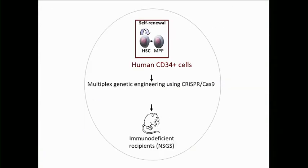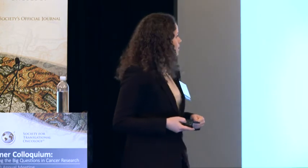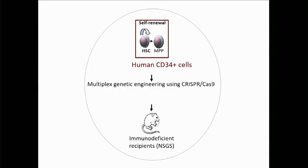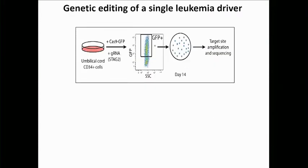For this model, we decided to use human CD34-positive cells, which are enriched for hematopoietic stem cells as well as myeloid progenitor cells, and to which we have relatively easy access. Using CRISPR genome engineering — a technology that has really revolutionized the way we do genetic engineering and molecular biology — we developed a methodology to do this in a multiplex fashion, introducing multiple different lesions in these hematopoietic stem cells, transplanting them into immunodeficient recipients, and following them over time.